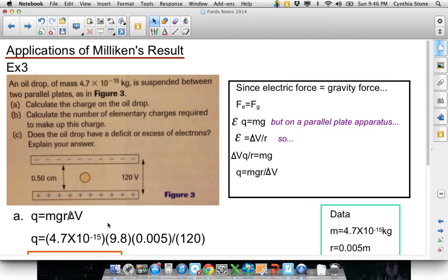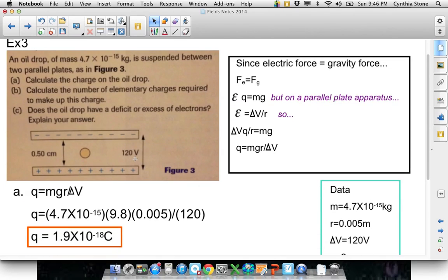Okay. Oil drop. We know its mass, and we know it's between two parallel plates. Calculate the charge. So, this is coming down to, I gave you this equation already. Mgr, r is the distance between the plates, divided by potential difference. We're given the potential difference as 120. We're given the r is 0.5 centimeters, so divide by 100 to get meters.